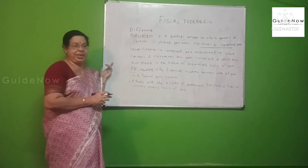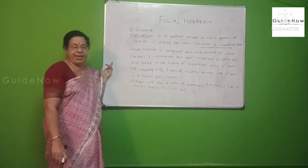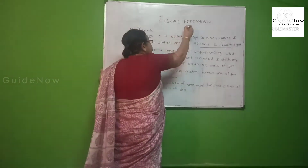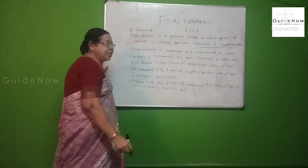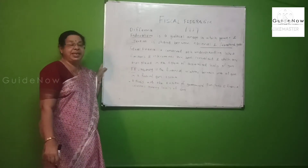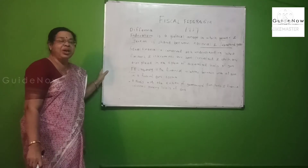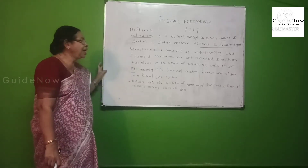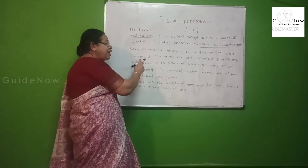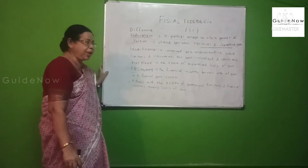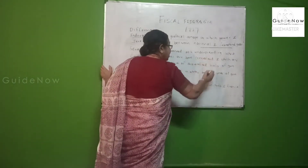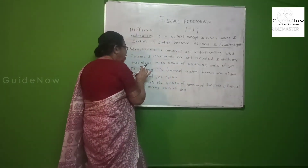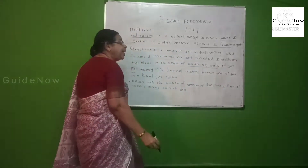Fiscal federalism is a term introduced by Richard Musgrave in the year 1959. It is concerned with understanding which functions and instruments are best centralized and which are best placed in the sphere of decentralized levels of government.